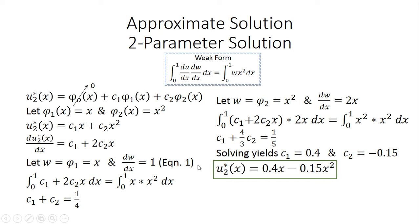For our first equation, we let w equal phi_1 equal x, so dw/dx equals 1. Plugging du/dx equals c1 plus 2c2 x and dw/dx equals 1 into the weak form, and setting w equal to x multiplied by x squared, then solving the integral gives us the first equation: c1 plus c2 equals 1/4.